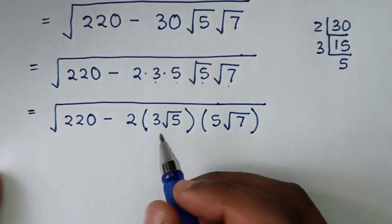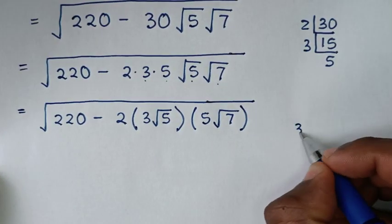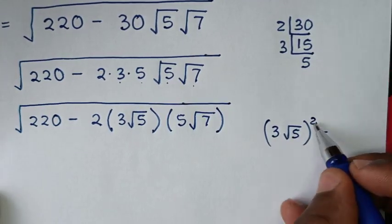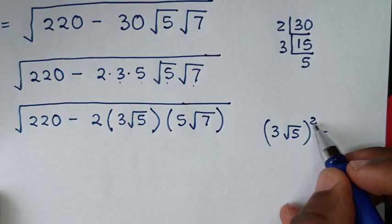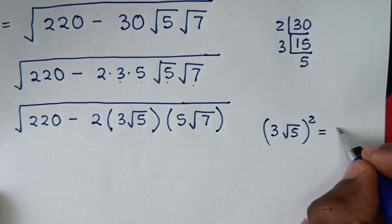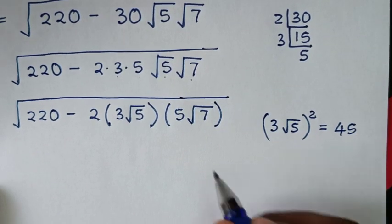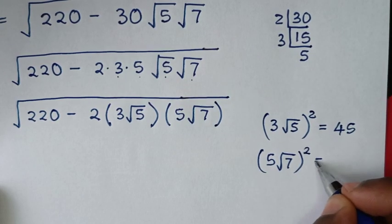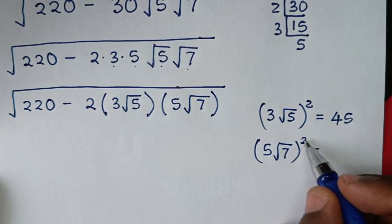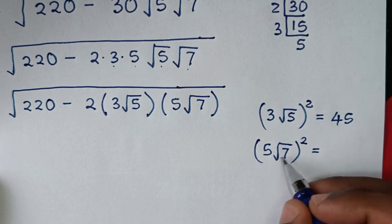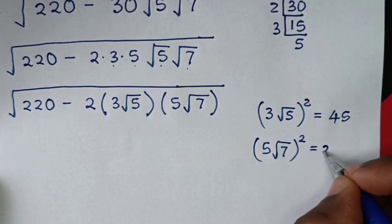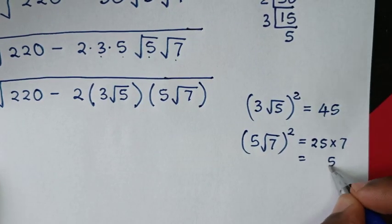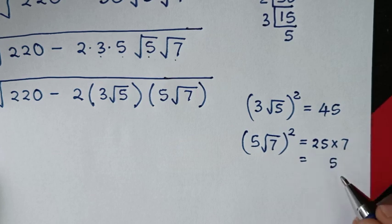In the next step, we find the square of 3 square root of 5: the square of 3 is 9, the square of square root of 5 is 5, so 9 times 5 is 45. And the square of 5 square root of 7: 5 squared is 25, square root of 7 squared is 7, so 25 times 7 equals 175.